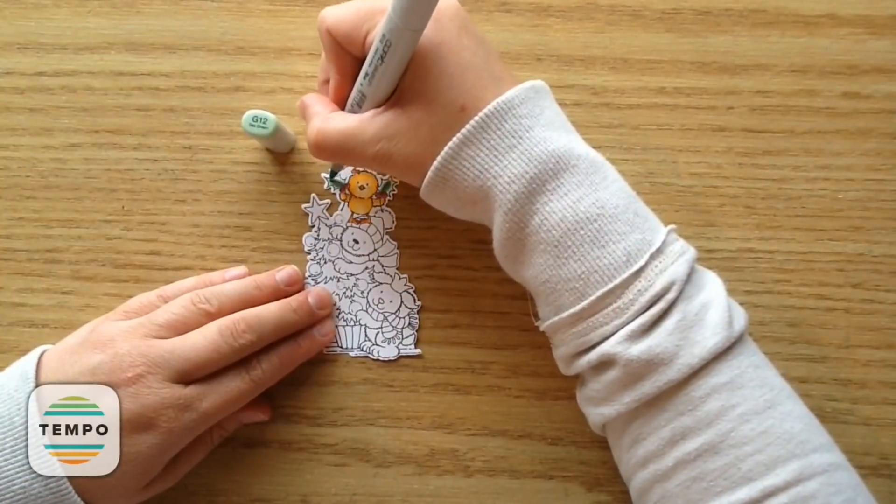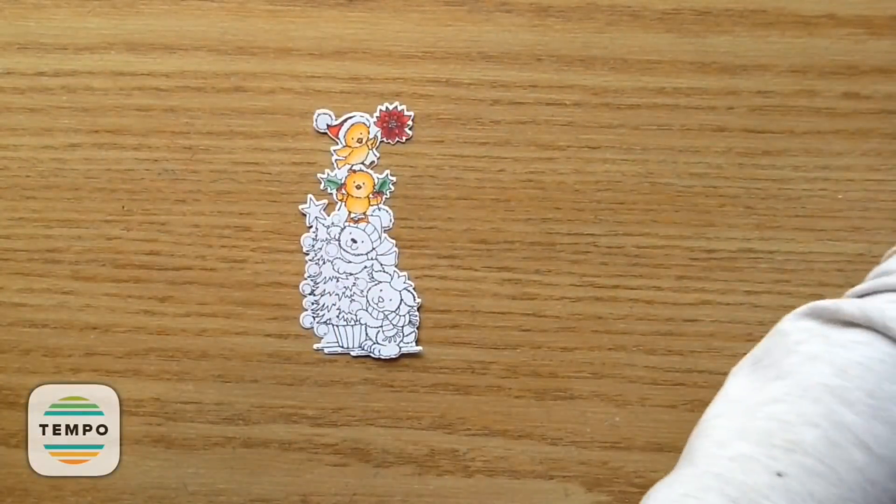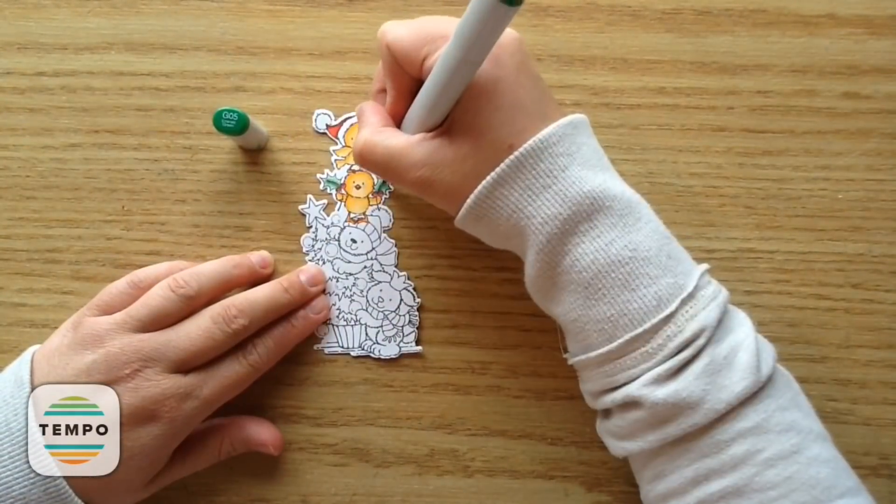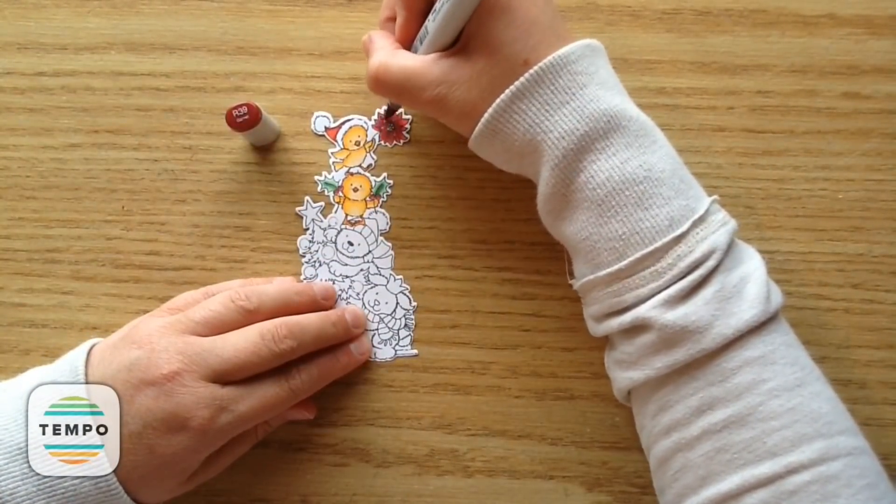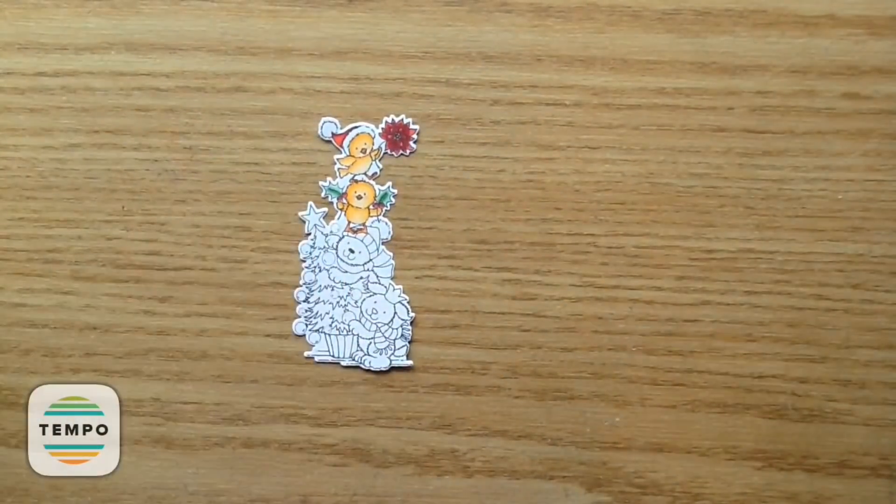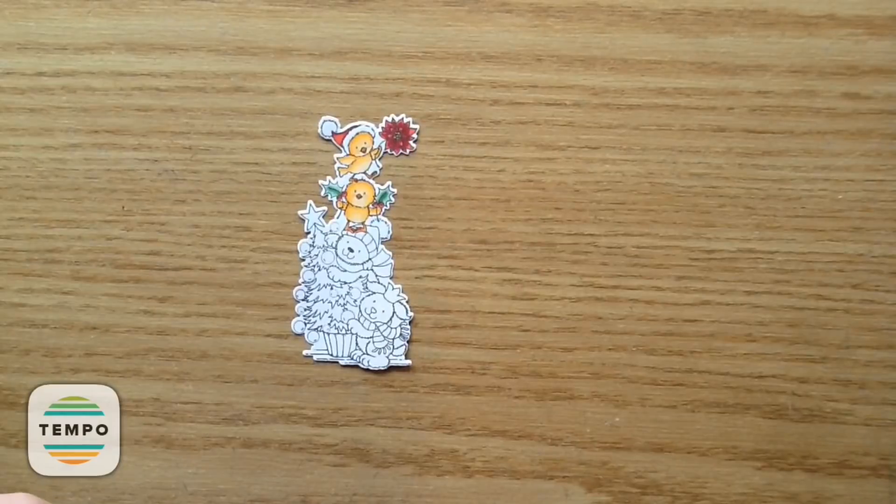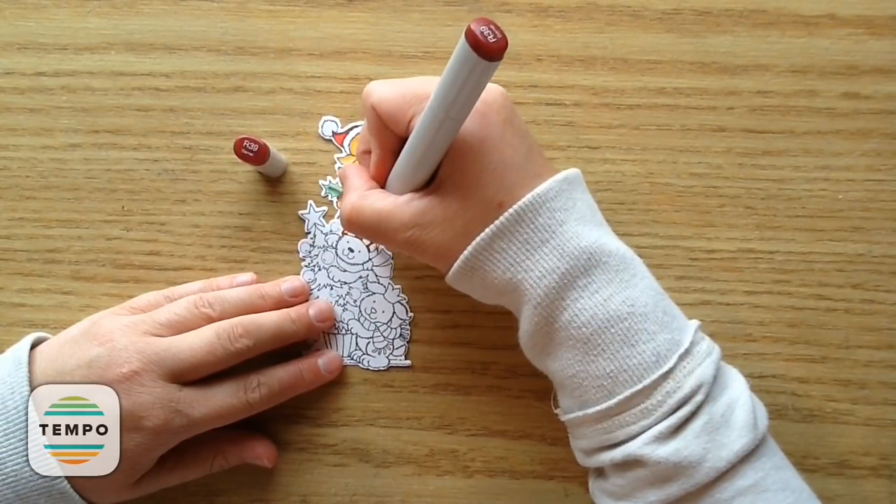Then for the little leaf, I used G07, G24, and G12. And then I go back in with G05. And then I go back in with R39 just to darken up the dark parts of all of the little pieces. And then I went in with Y35 for the middle of the poinsettia.